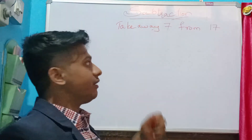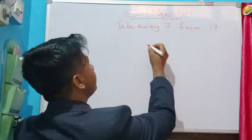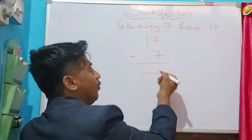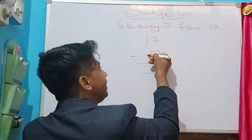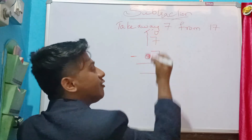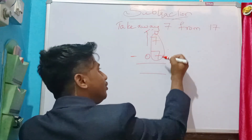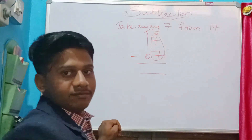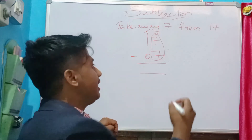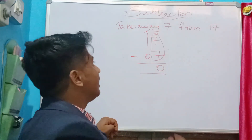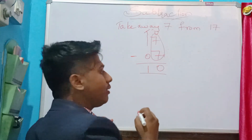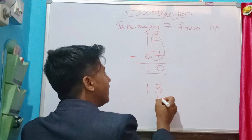One more problem: take away 7 from 17, which means 17 minus 7. Write zero at tens position for the second number if nothing is there. Units position: 7 minus 7 equals 0. Tens position: 1 minus 0 equals 1. So the answer is 10.